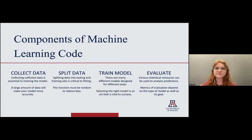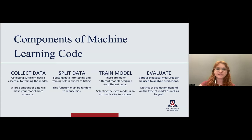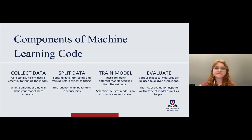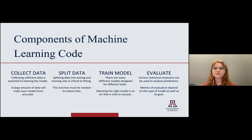What are the components of machine learning? First, you have to collect a lot of sufficient data and make sure your data is clean. Then you need to split your data into testing and training sets. Then you train your model on your training set, selecting the correct type of model for your type of data and task. And finally, you evaluate your model using statistical measures.